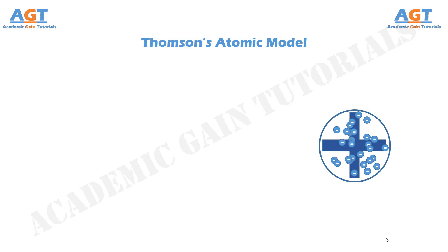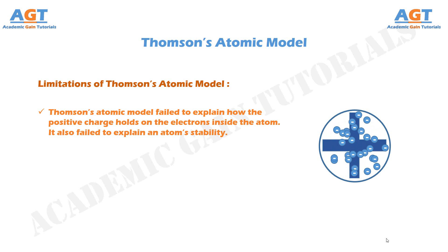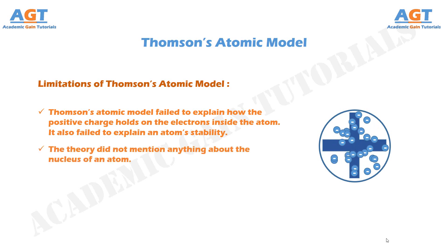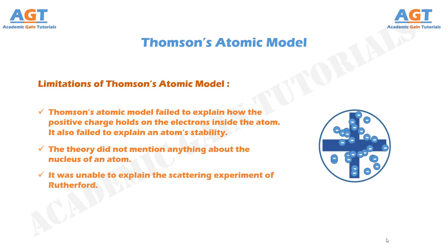Now let's look at the drawbacks or limitations of Thomson's atomic model. Thomson's atomic model failed to explain how the positive charge holds the electrons inside the atom. It also failed to explain an atom's stability. The theory given by Thomson did not mention anything about the nucleus of an atom. And also, Thomson's atomic model was unable to explain the scattering experiment of Rutherford.